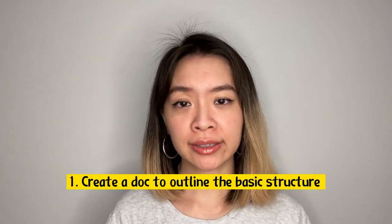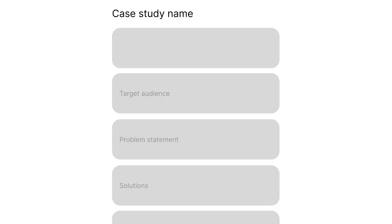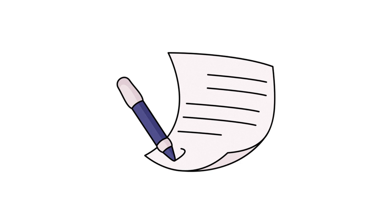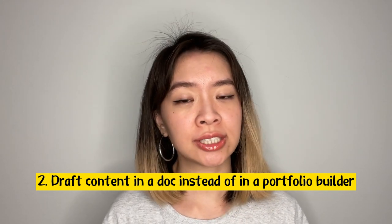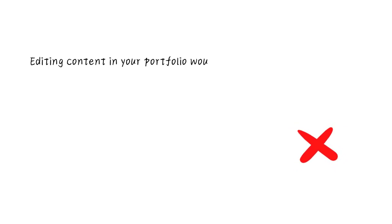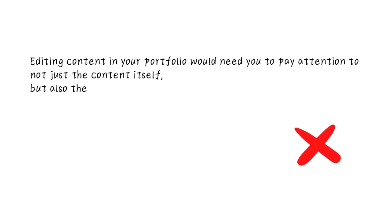When adding a new case study to a portfolio builder, I would first create a doc to outline the basic structure. For example, a case study might have sections for target audiences, problems you are solving, and solutions. Writing them down in a doc helps you organize information clearly. If you need to shuffle the order of sections, the cost of doing that in a doc is much less than shuffling them once they are fully polished in a portfolio builder.